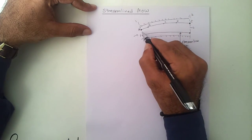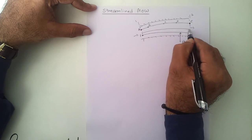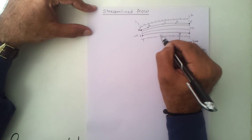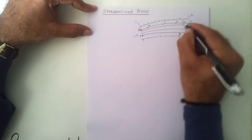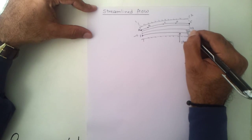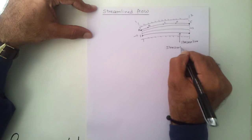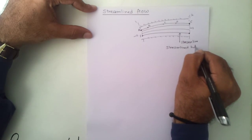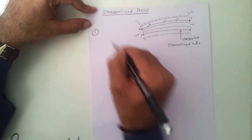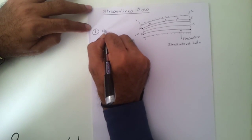Similarly, there are multiple such streamlines. There will be another streamline, and another one, and so on. This entire arrangement or structure is known as a streamline tube. The first feature of streamline flow is that particles follow a definite path.